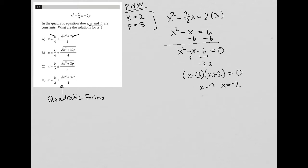So hopefully you remember that the quadratic formula is that x equals negative b plus or minus the square root of b squared minus 4ac all over 2a.